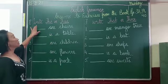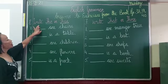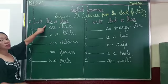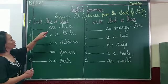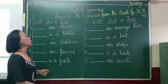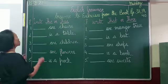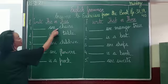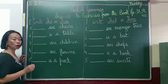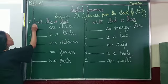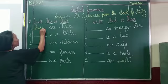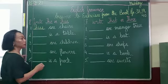The first exercise, number one, the question was: write 'this' or 'these'. This means for one which is near; these means for more than one which is also near. So, 'dash are chairs' — 'are' means more than one, so your answer is capital T-H-E-S-E: these are chairs.